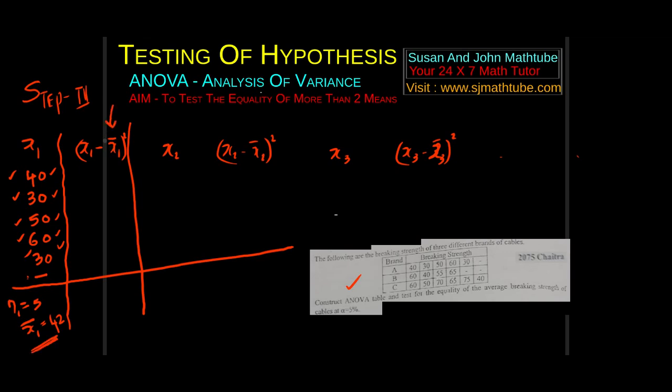Once you have filled the first column, you are ready for the second column because the second column involves x1 bar. Unless and until you finish this column, you cannot start with the second column. So it is x1 minus x1 bar. That means 40 minus 42, which is 2, and 2 squared is 4. It is negative but we don't care about that negative because it is square. 30 minus 42 is minus 12, but you can think about 12 and square 12, so that is 144. 50 minus 42 is 8, so 64. 60 minus 42 is 18, so we get 324, and again 144.